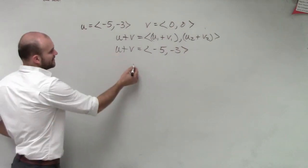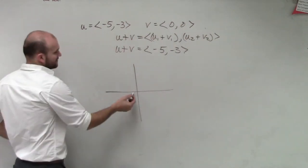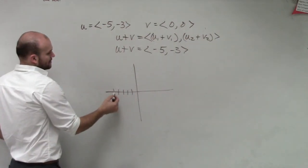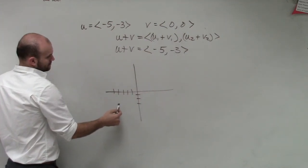So it's going to do the resultant vector. Negative 5, negative 3. Yes.